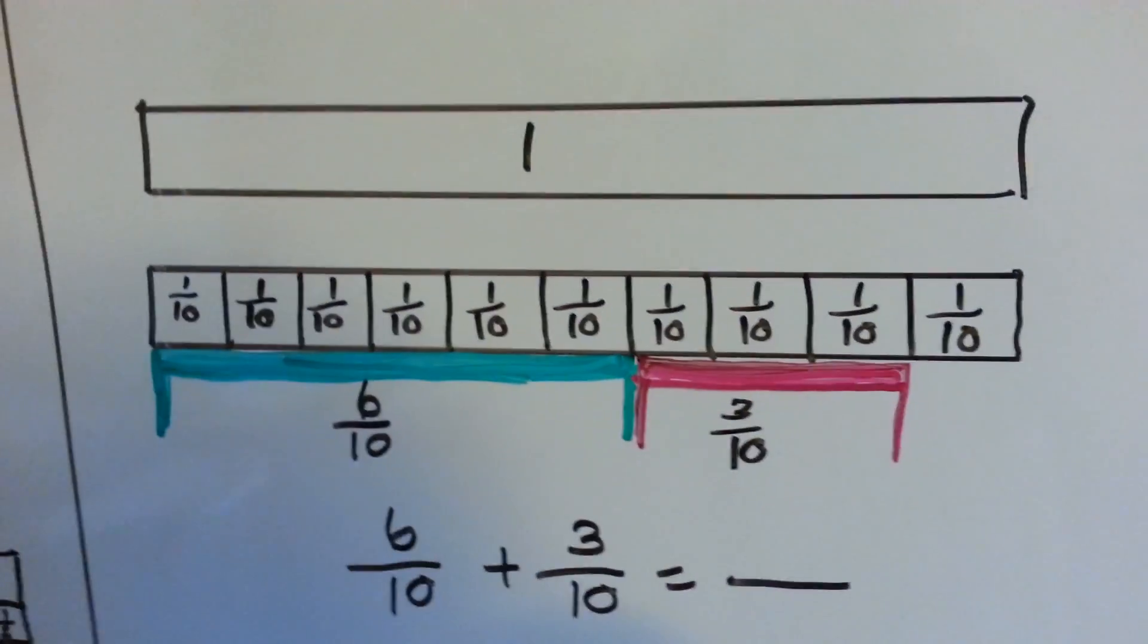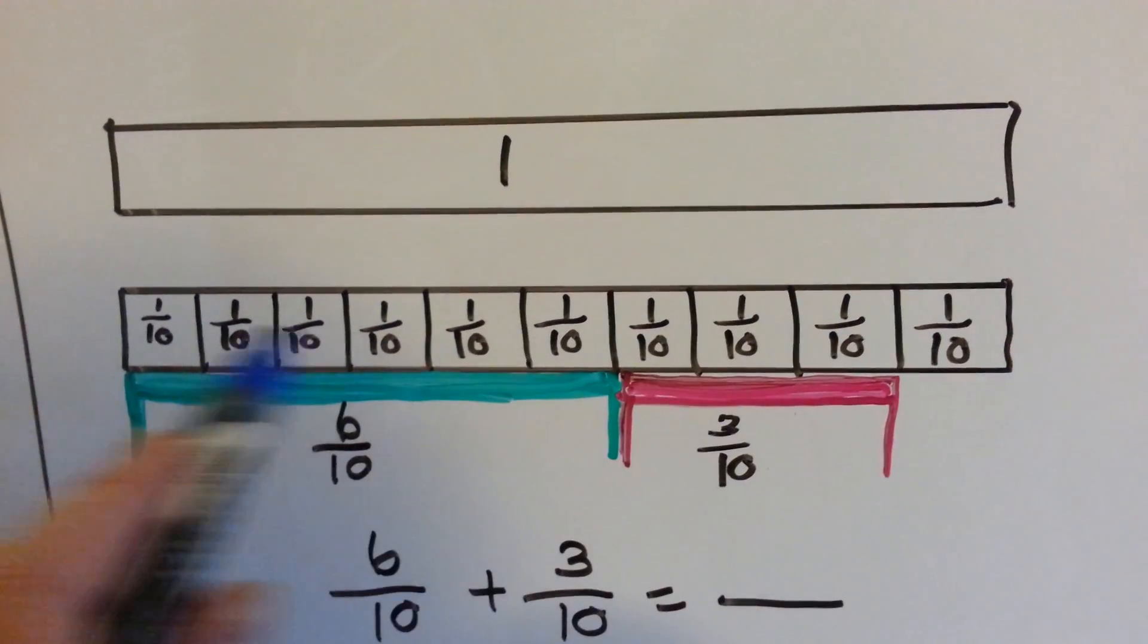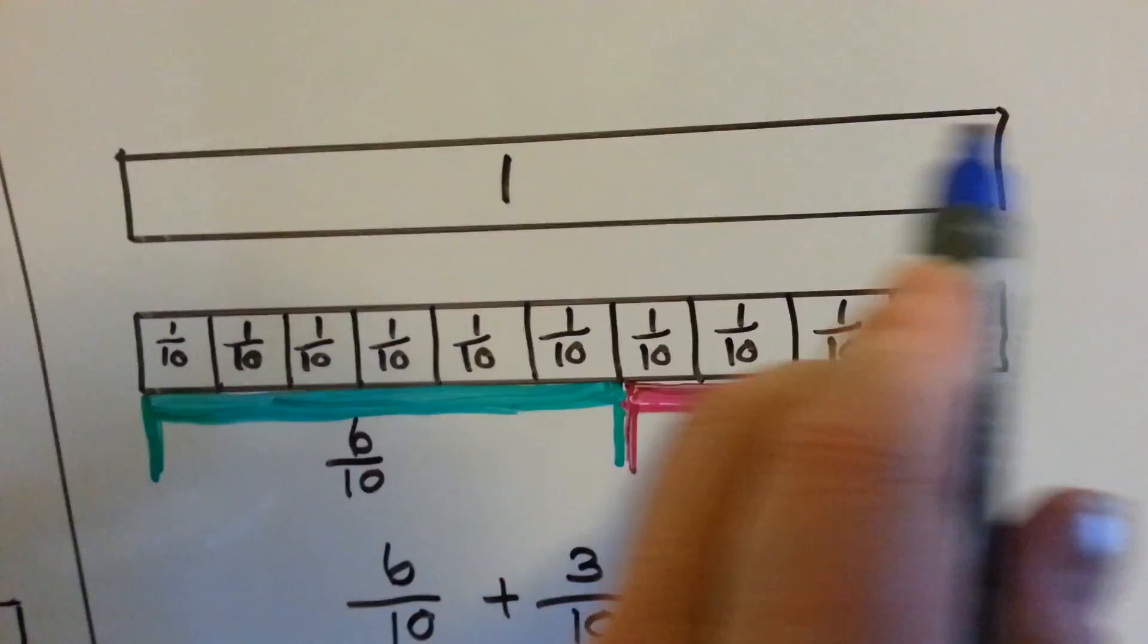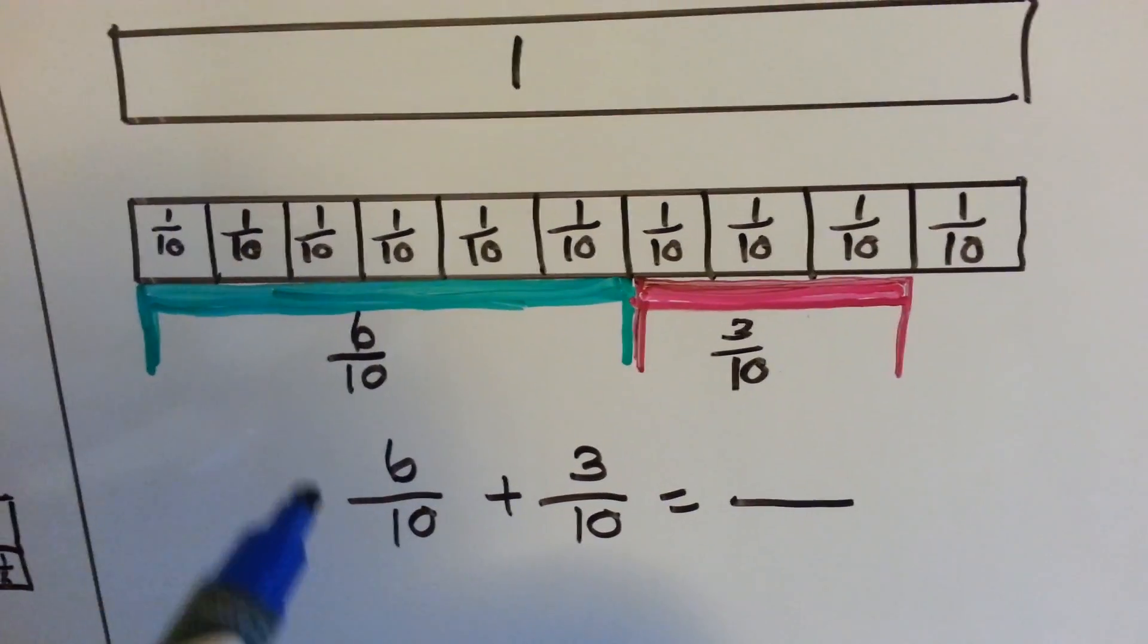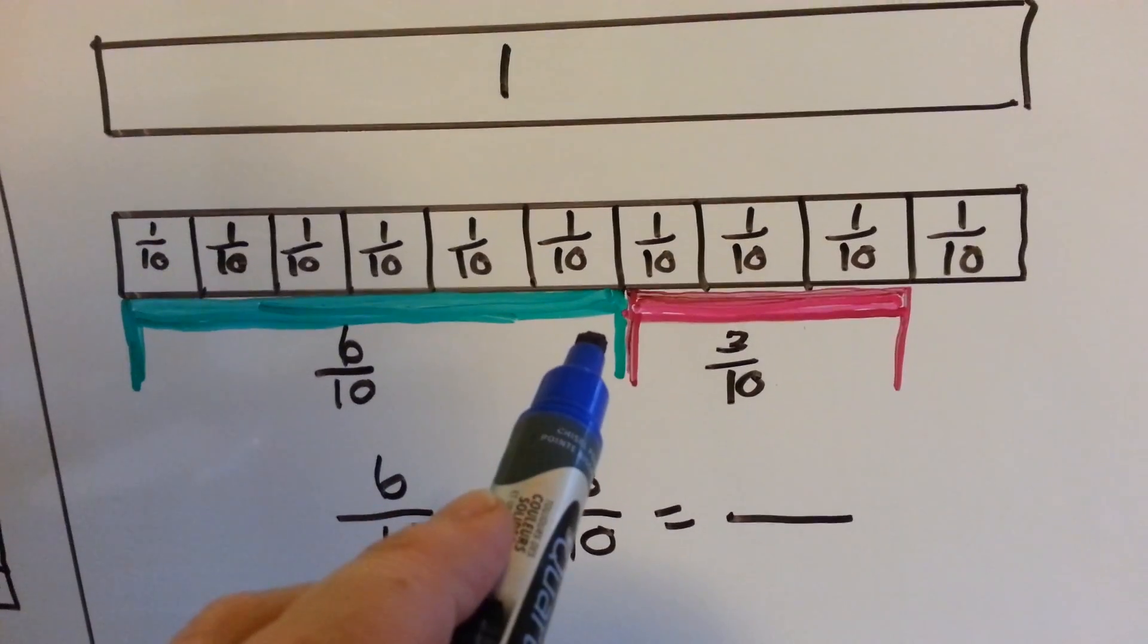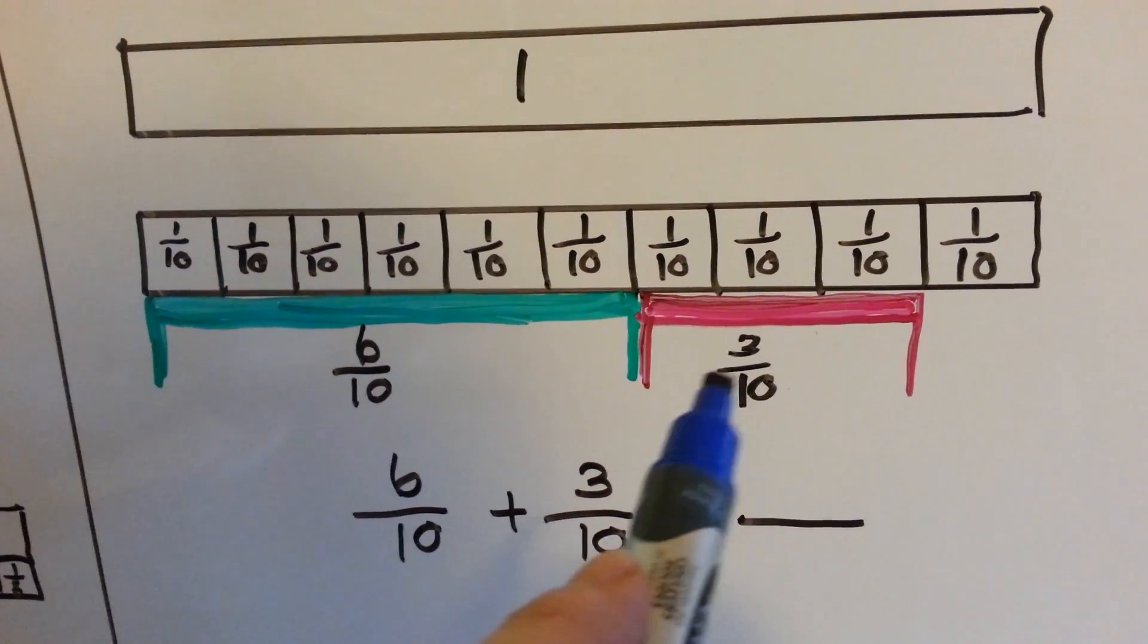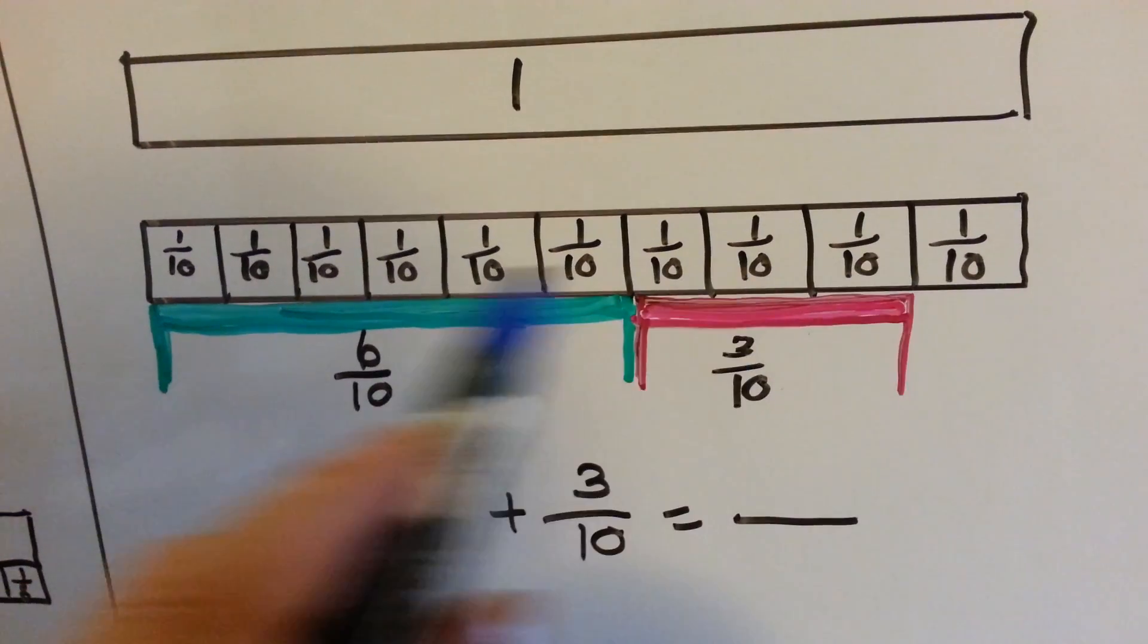Let's try this one. This is cut into tenths. It's cut into 10 pieces because this is what a whole one would look like if it wasn't cut. If you had 6 tenths and took 3 tenths more, how much of it would be cut and taken?